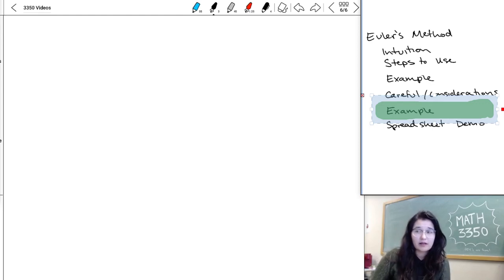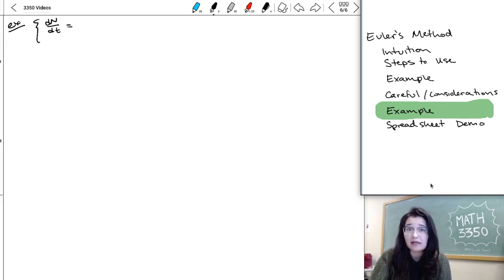Okay, so we're going to do an example next, one more example of computing Euler approximations by hand, and we're actually going to return to that logistic example that we were doing before, that dn/dt equals rn times k minus n.